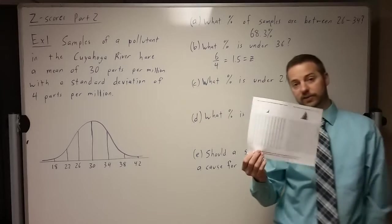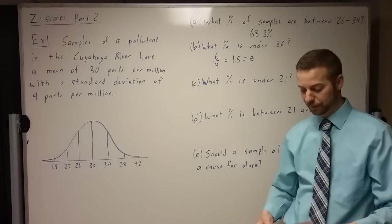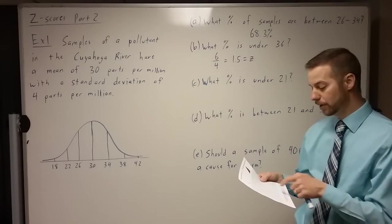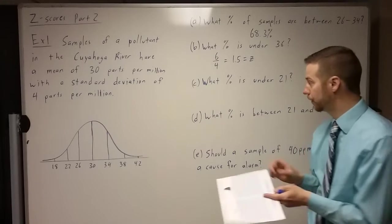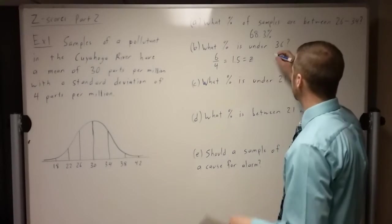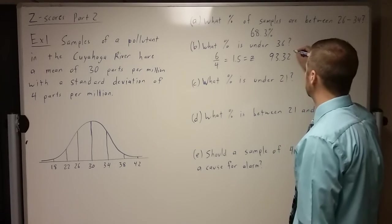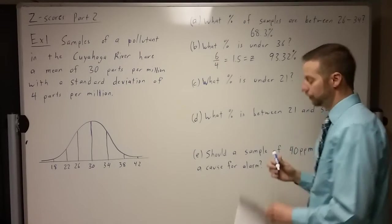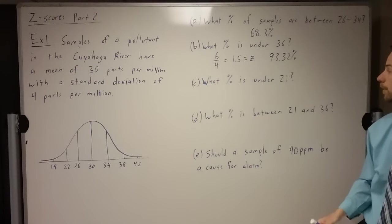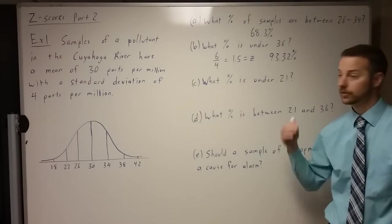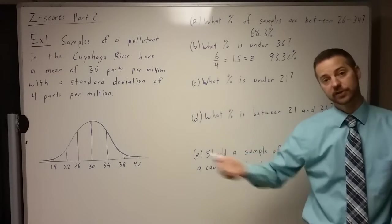So looking at our z-table at 1.5, the percentage that goes along with that is 93.32. I know on your table it says 0.9332, but just making that decimal into a percentage, you just move the decimal 2 places. So 93.32 percent of the samples should be under 36.